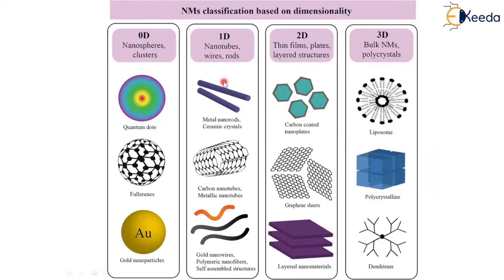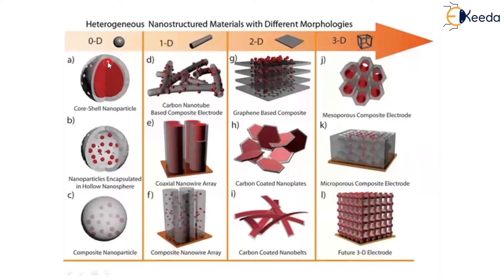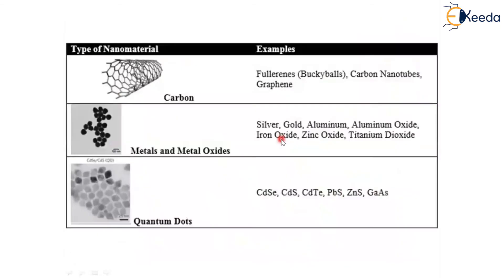Looking at more dimensional examples: in zero dimension, core-shell nanoparticles and nanoparticles encapsulated in hollow nanospheres; in one dimension, carbon nanotube composite electrodes and coaxial nanowires; in two dimensions, graphene-based composites and carbon-coated nanobelts; and in three dimensions, 3D composite electrodes with many available microstructures.